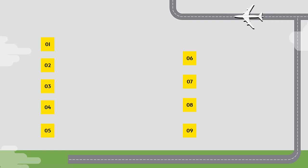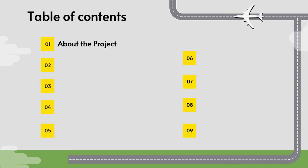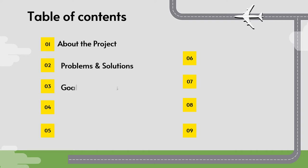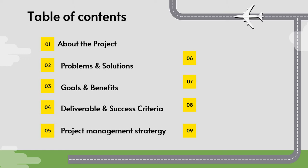Let's look at the table of contents and the various parts we will cover under this project proposal. First, we have the project overview, problem and solutions, goals and benefits, deliverables and success criteria, project management strategy, budget, requirements, timeline, and conclusion.